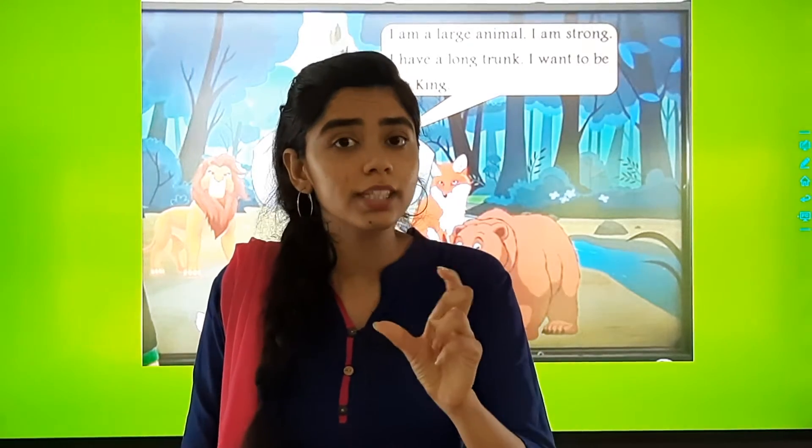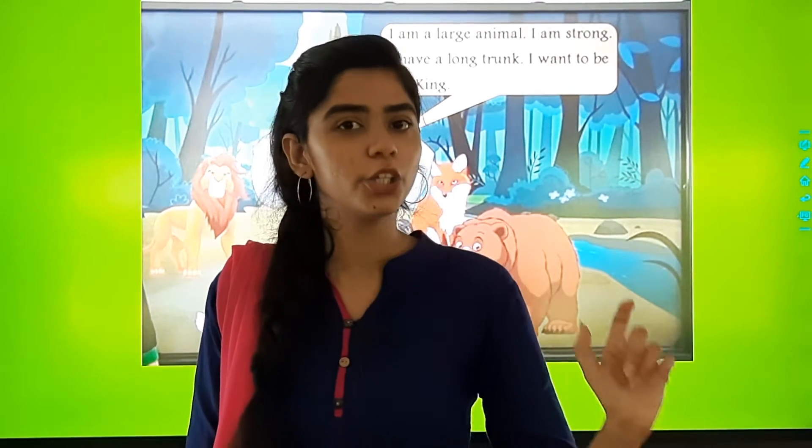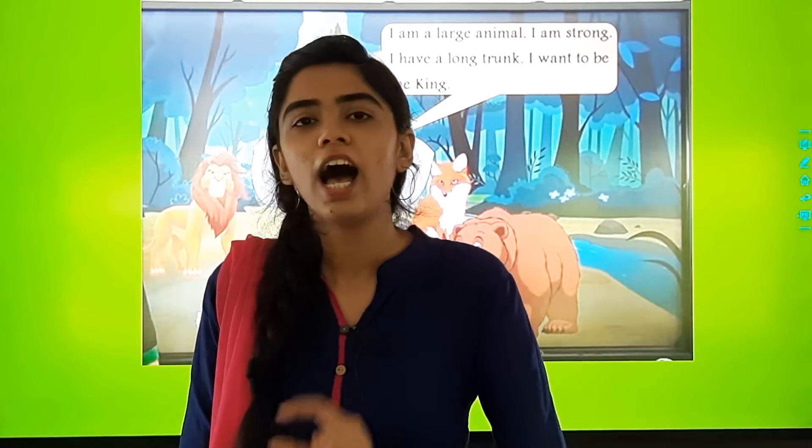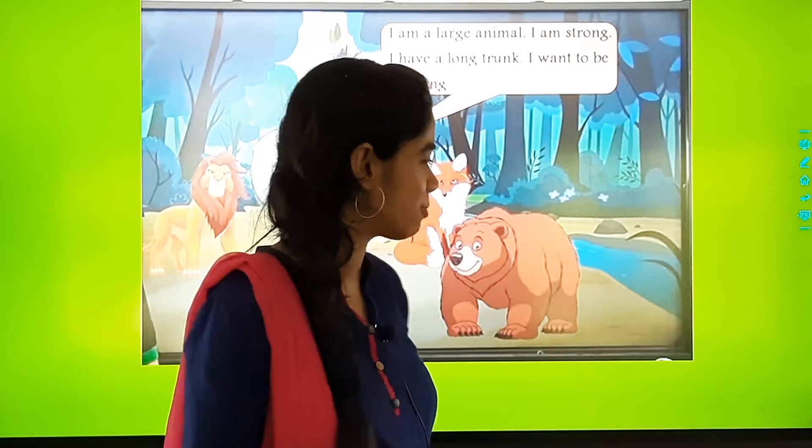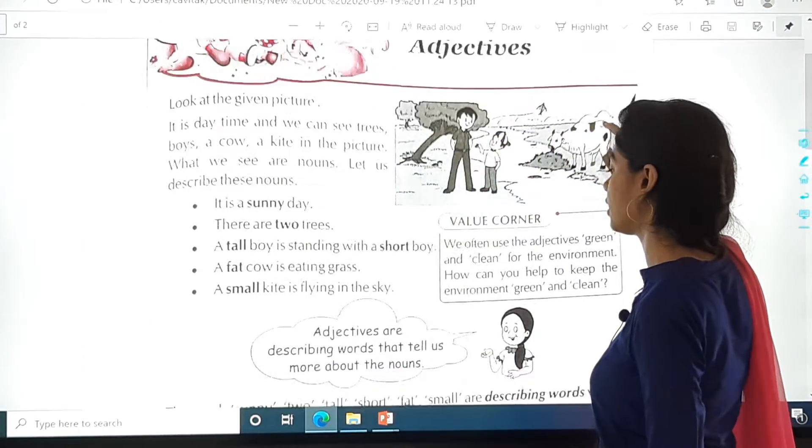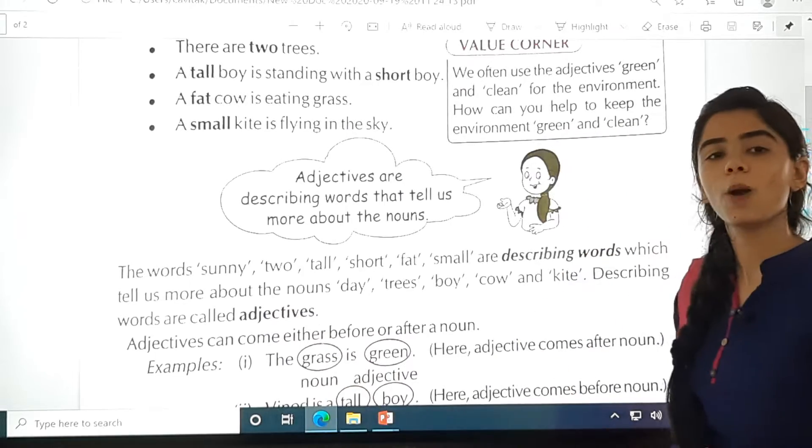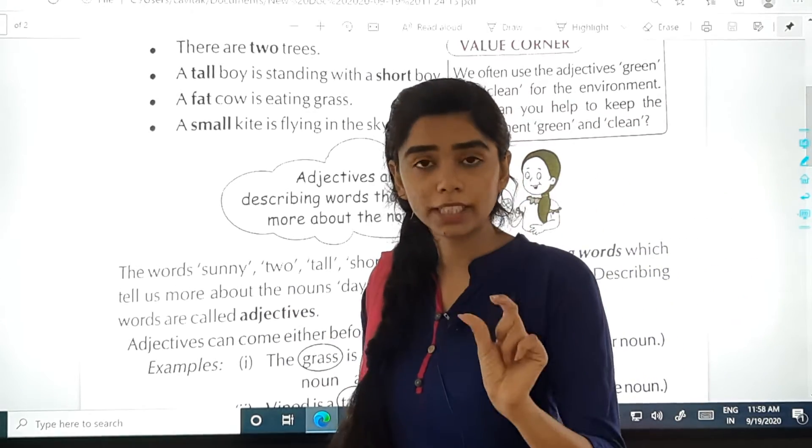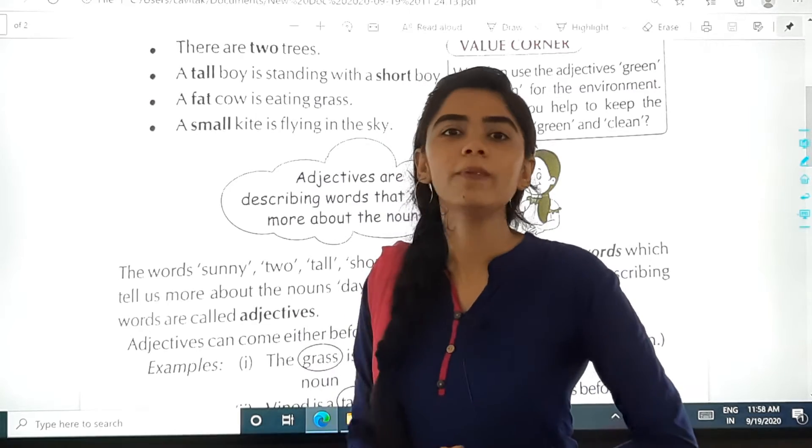Now in grammar, what happens? The words that are used to describe person, place, animal, that is the words that are used to describe the nouns, are known as adjectives. So today we will study about adjectives. So let us begin. What are adjectives? Adjectives are describing words that tell us more about the nouns.